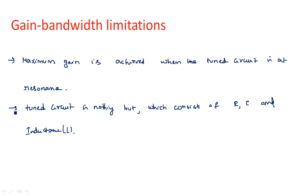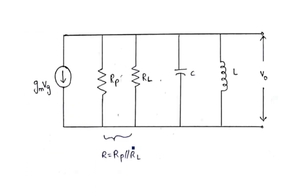Now let us see the equivalent circuit. Here is the equivalent circuit of this triode drawn at high frequencies. The constant current source is taken as Gm·Vg. The plate resistance Rp and load resistance Rl appear at the output terminal, along with capacitance and inductance forming a tank circuit. Rp and Rl in parallel give an equivalent resistance R.